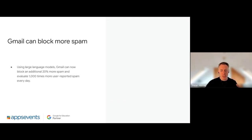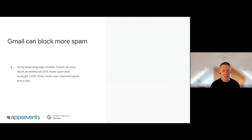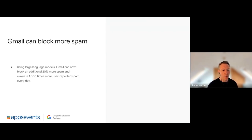Google is also using AI to help improve the fight against spam. They say they can block an additional 20% more spam and evaluate a thousand more user-reported spam items every day. We should see even better improvements in the fight against spam. Gmail is probably one of the better platforms out there at filtering spam, so it's really good to see Google enhancing that further.